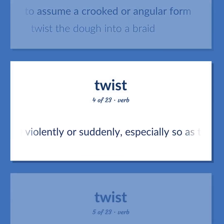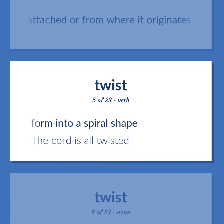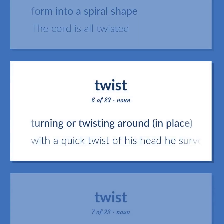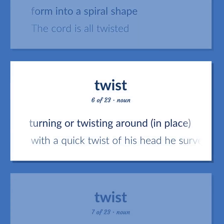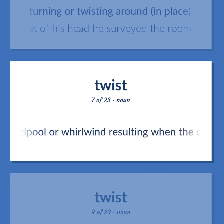Twist: to twist or pull violently or suddenly, especially so as to remove something from that to which it is attached or from where it originates. Also, to form into a spiral shape — 'the cord is all twisted.' Also, turning or twisting around in place — 'with a quick twist of his head he surveyed the room.' Also, a miniature whirlpool or whirlwind resulting when the current of a fluid doubles back on itself.